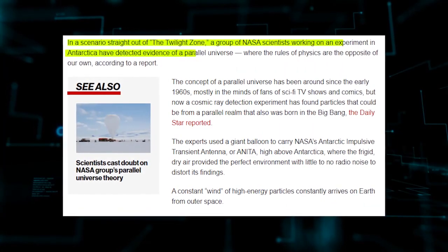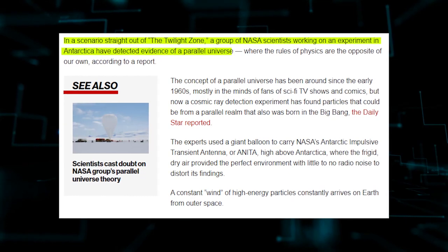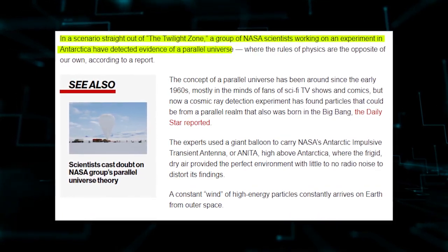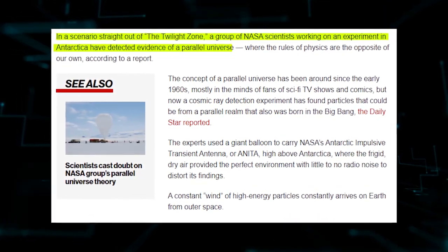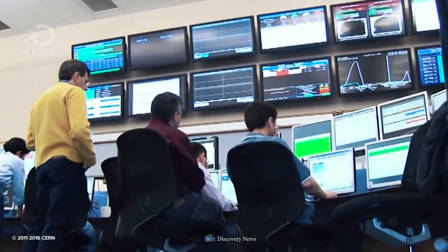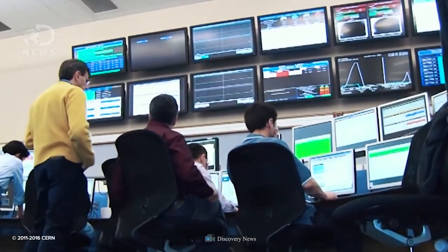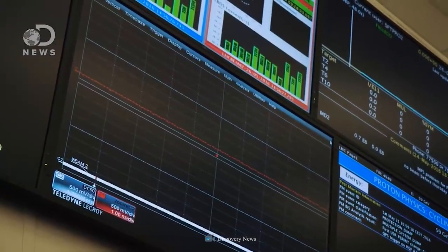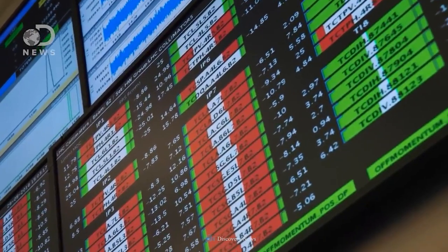A NASA crew performing an experiment in Antarctica encountered something straight out of the twilight zone when they discovered evidence of a parallel universe with completely different physical laws than our own. Despite skepticism from some scientists, mounting evidence suggests the existence of other universes is more than just a theory.